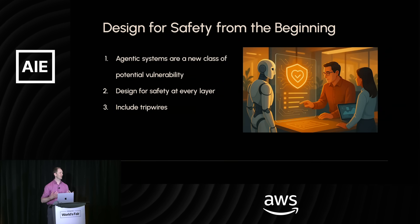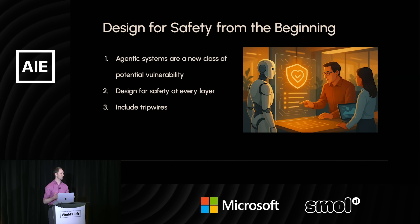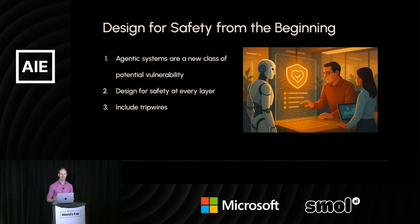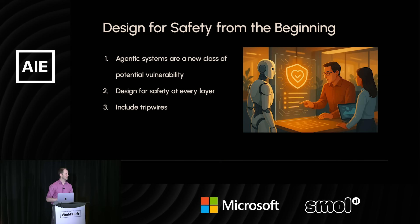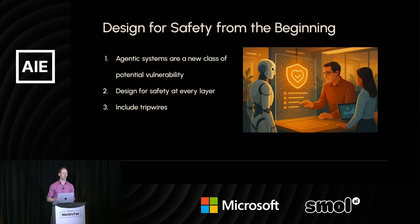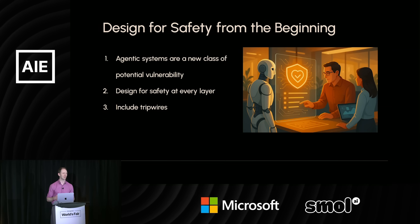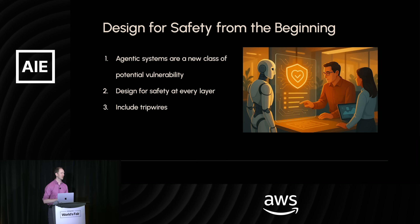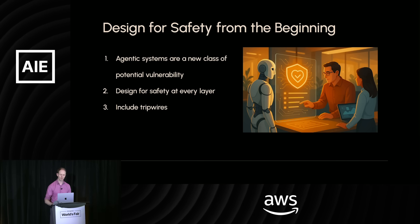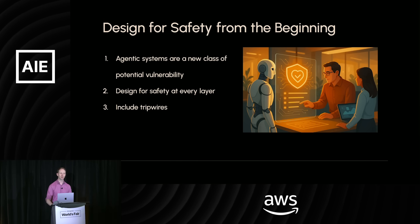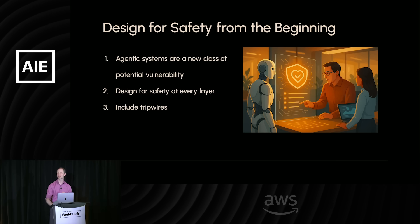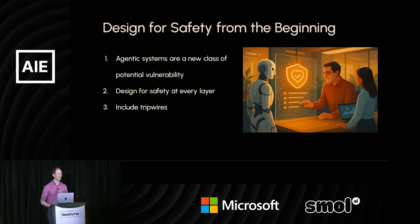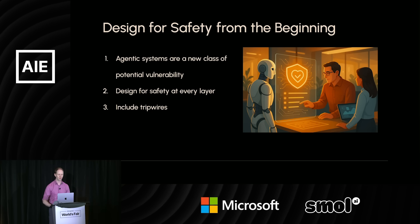Coming from the cybersecurity division: this is such an exciting time for this technology, but agentic systems are a new class of potential vulnerability. I encourage all of us to really design for safety at every layer. PyRIT can definitely help on many layers, but good software engineering and good principles are really critical. Make sure you're building tripwires and detectors at different stages of your agentic stack so that you can eject out and fall back to human review in all critical cases.